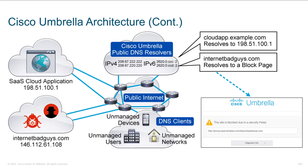Looking deeper at how the Umbrella architecture works: if I want to resolve a domain like cloudapp.example.com and we know it's benign, we return the IP address — say 198.51.100.1 — and the user goes right through. If they try to go to internetbadguys.com, because we know it's hostile, we handle it right there in DNS — we tell them they don't want to go there, and steer them to a page saying the site was blocked due to a security threat. We control where people connect by analyzing DNS traffic.